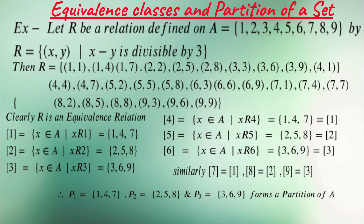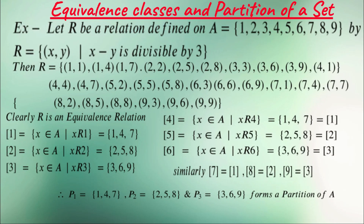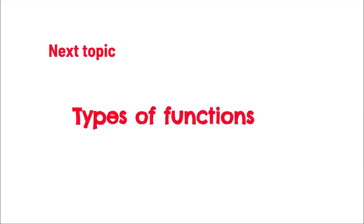You can see that these three sets: P1 ∪ P2 ∪ P3 = A itself. And if you take any two sets, P1 ∩ P2, P2 ∩ P3, or P1 ∩ P3, the intersection is empty — no elements in common. So it's a partition of set A. Remember, a relation R that is an equivalence relation generates equivalence classes that form a partition of that set.